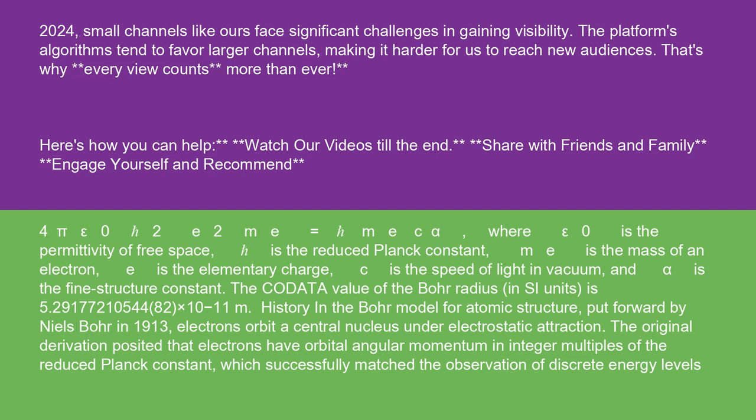History: In the Bohr model for atomic structure, put forward by Niels Bohr in 1913, electrons orbit a central nucleus under electrostatic attraction. The original derivation posited that electrons have orbital angular momentum in integer multiples of the reduced Planck constant, which successfully matched the observation of discrete energy levels.